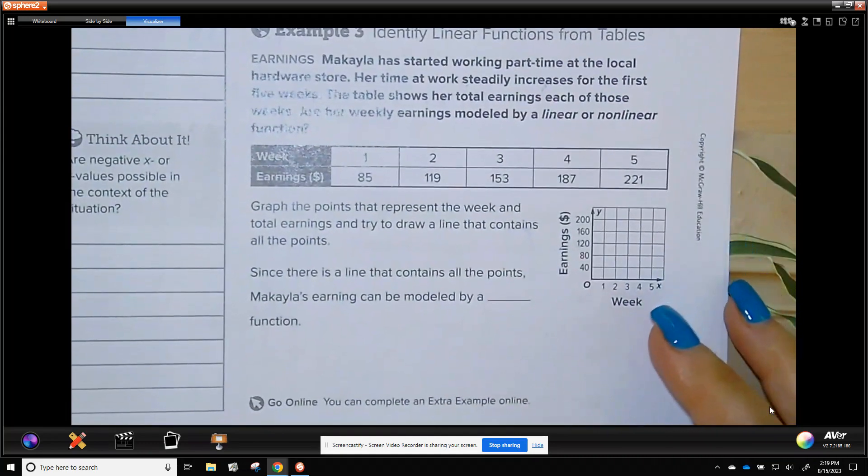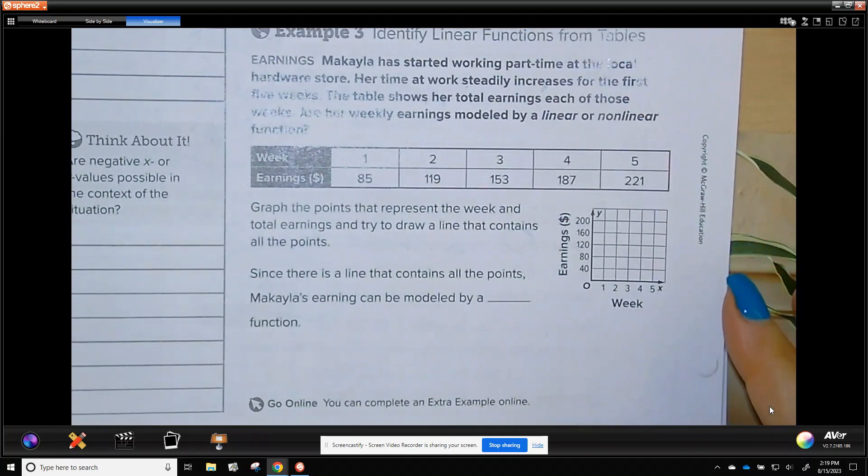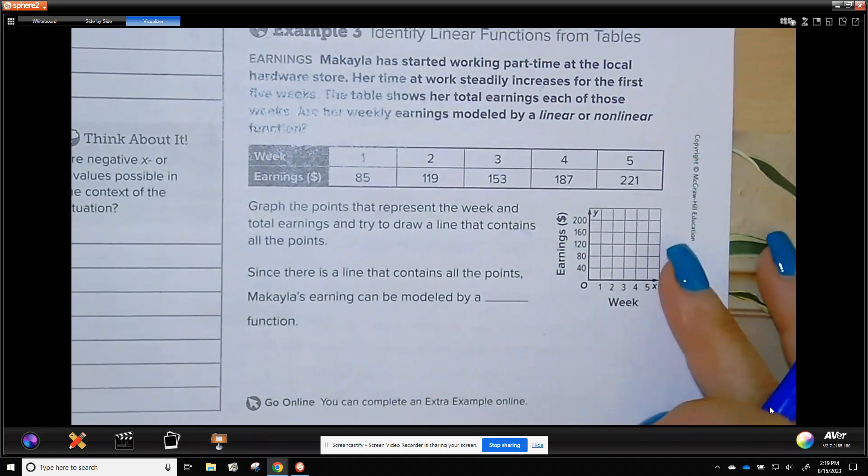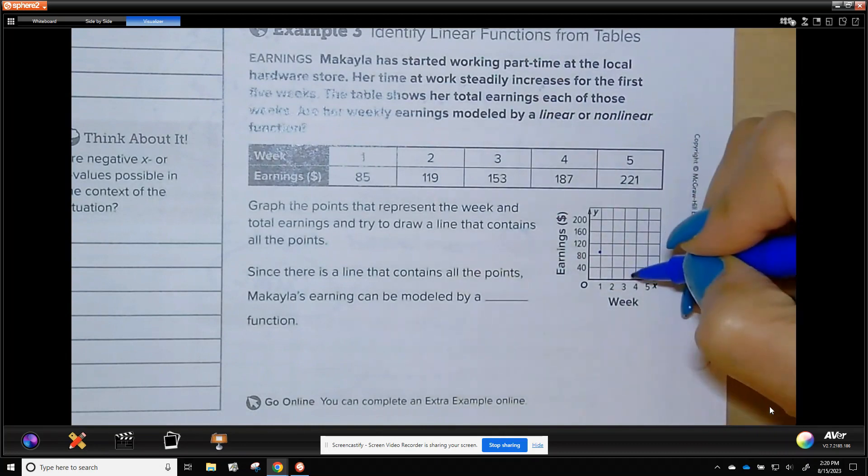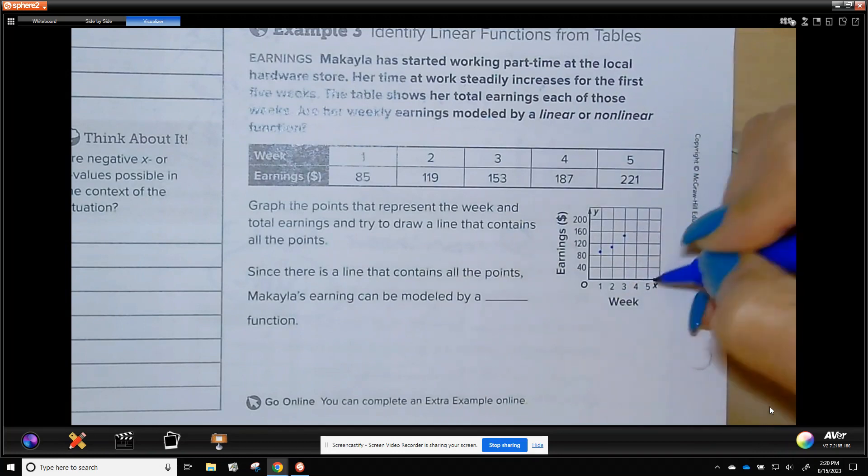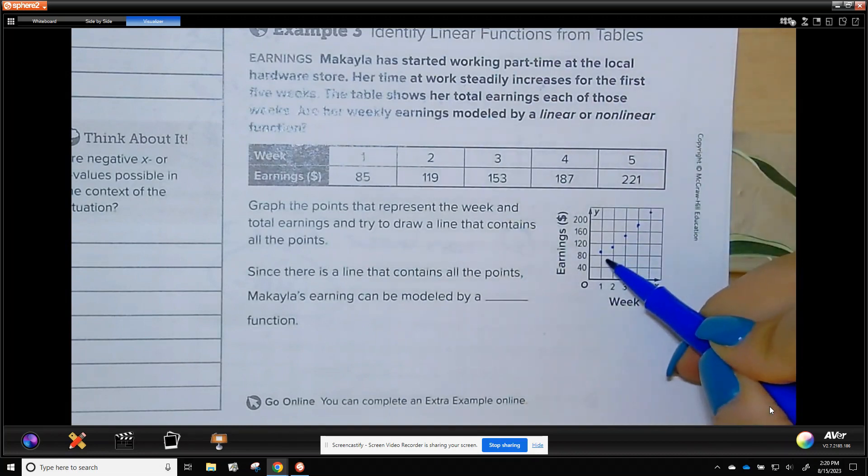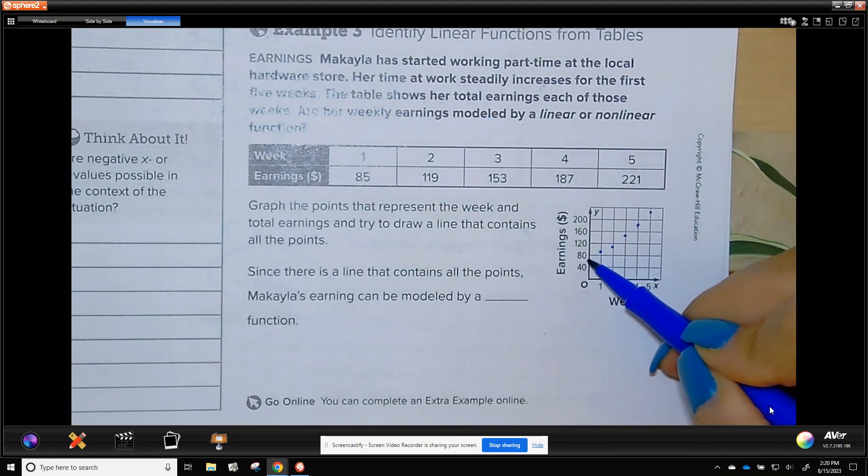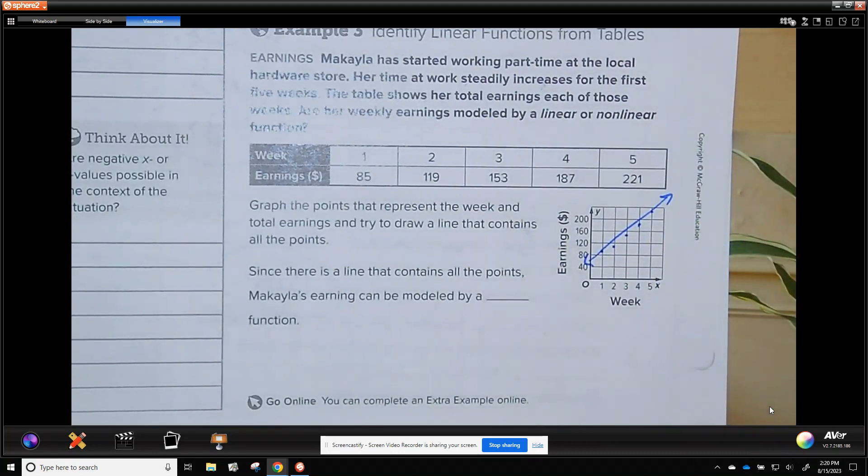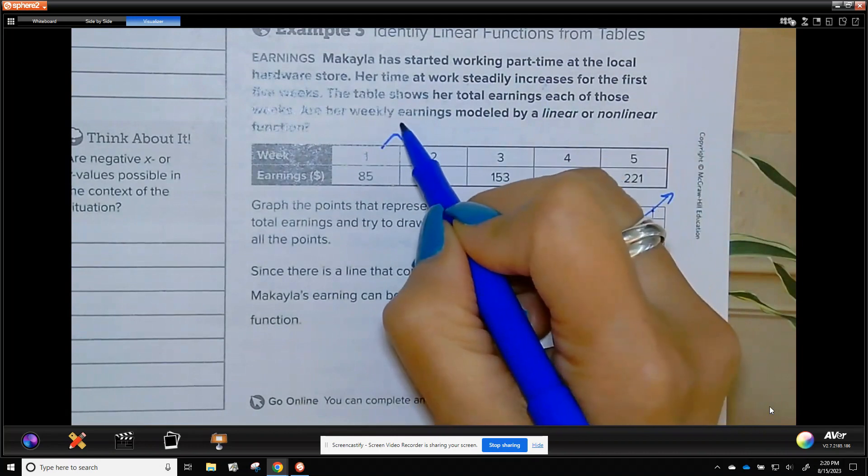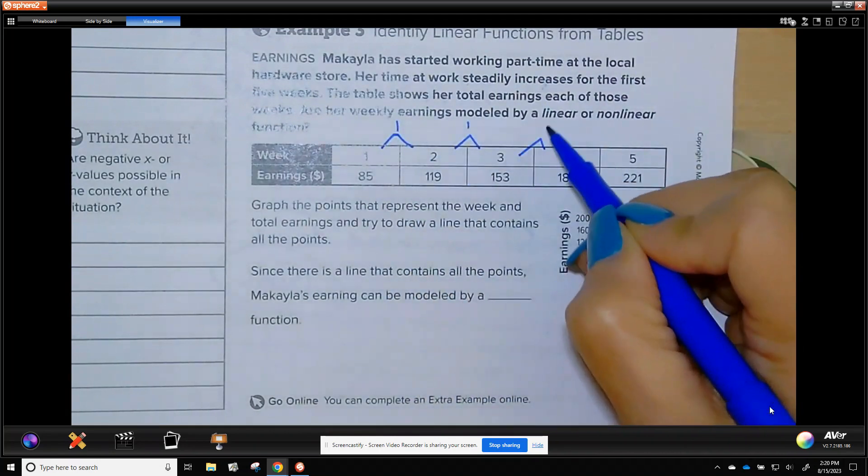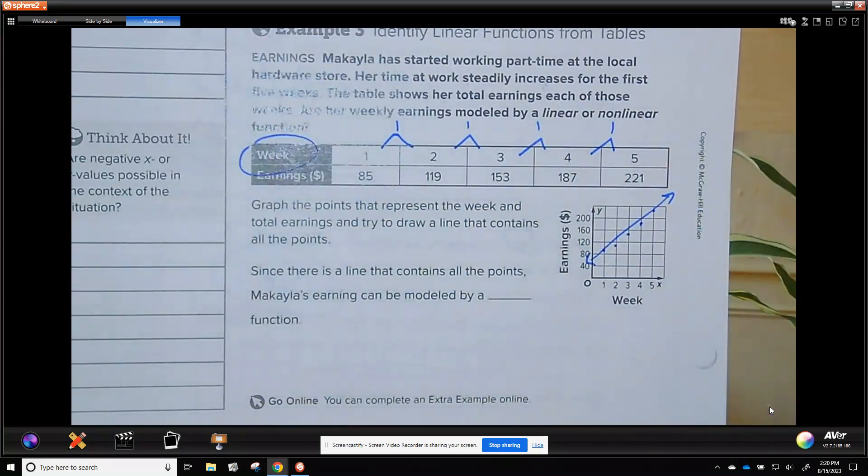Michaela started working part-time at a hardware store. Here's her earnings and the weeks that she worked. So, is this linear? You could do it by graphing, which is kind of hard, because this is so small. So, 1, 85, 2, 119, 3, 153, 4, 187, I'm just estimating, 5, 221. Now, it's kind of hard to tell, but those dots should be linear. And my line should go through the dots.